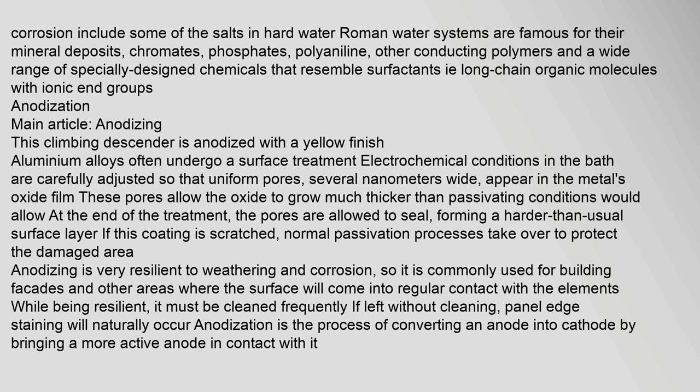Anodization — main article. This climbing descender is anodized with a yellow finish. Aluminium alloys often undergo a surface treatment where electrochemical conditions in the bath are carefully adjusted so that uniform pores, several nanometers wide, appear in the metal's oxide film. These pores allow the oxide to grow much thicker than passivating conditions would allow. At the end of the treatment, the pores are sealed, forming a harder-than-usual surface layer. If this coating is scratched, normal passivation processes take over to protect the damaged area. Anodizing is very resilient to weathering and corrosion, so it is commonly used for building facades. However, it must be cleaned frequently, as panel edge staining will naturally occur if left without cleaning.